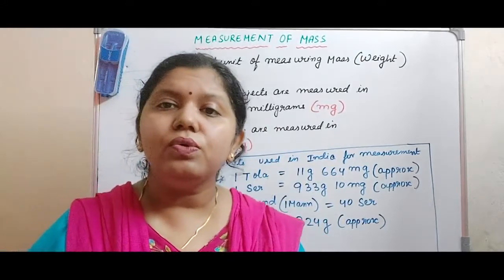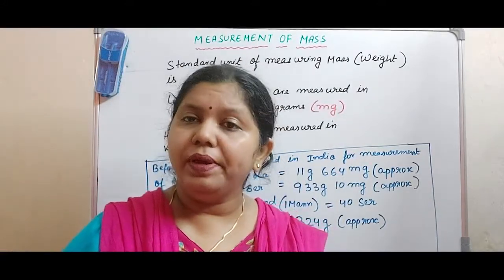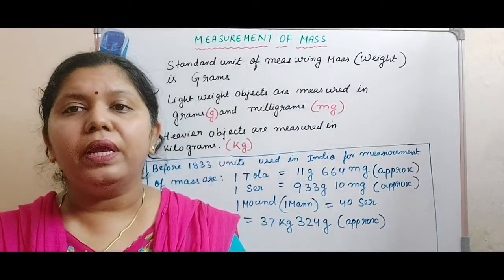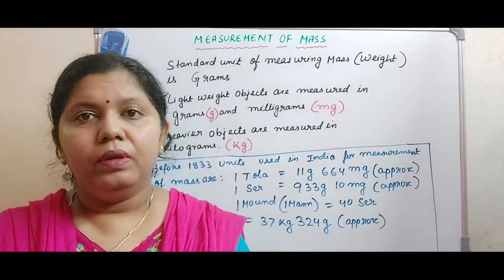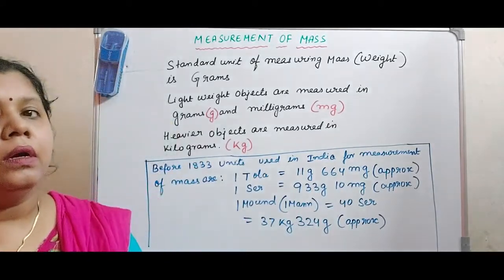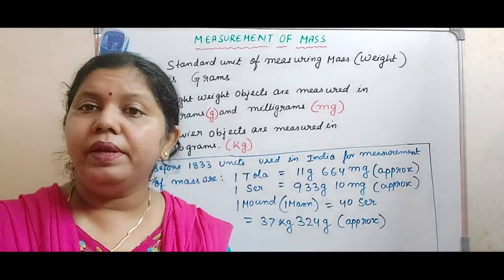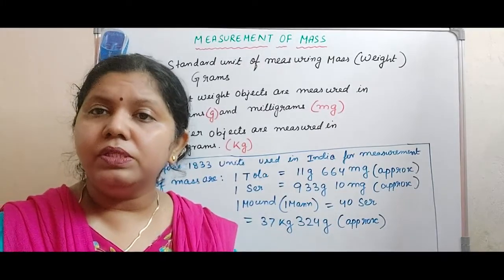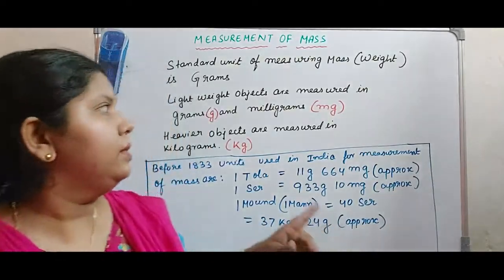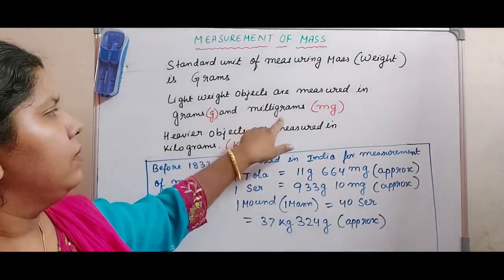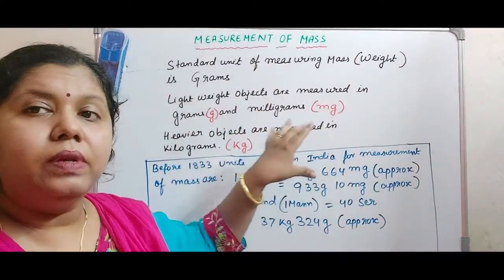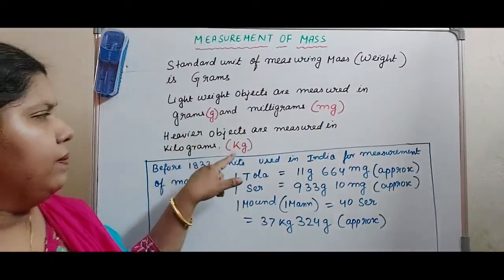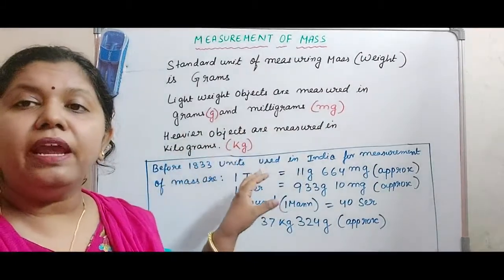First of all, let us know the standard unit of measurement of mass, that is grams, which we write in short form as G. You also have other units of measurement — multiples of grams — like milligrams, which is less in weight than grams, and kilograms, which is used to measure heavier objects.